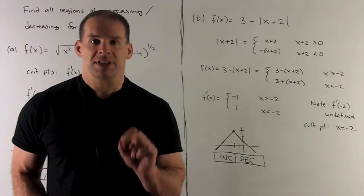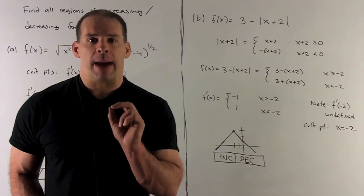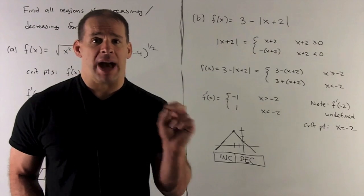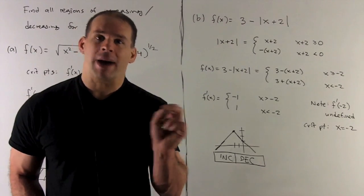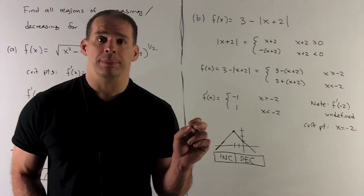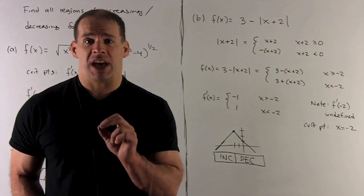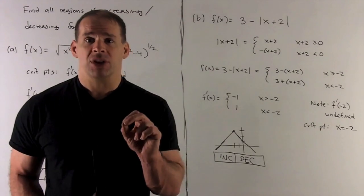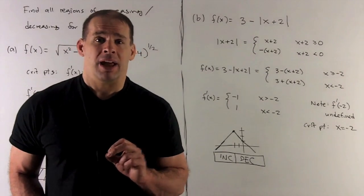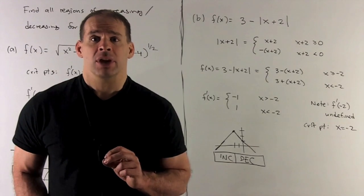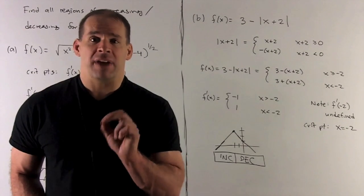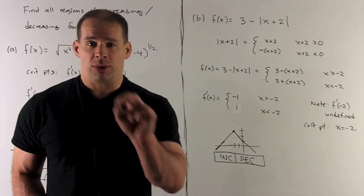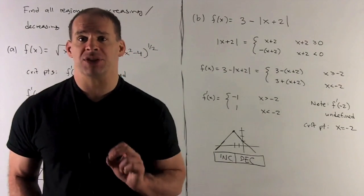Recall: the absolute value of some expression equals that expression if it's greater than or equal to 0 (leave it alone), and equals negative one times that expression if it's negative (to remove the minus sign). The net effect of taking the absolute value of a negative number is just multiplying by minus 1. So we substitute (x + 2) in place of the generic expression.